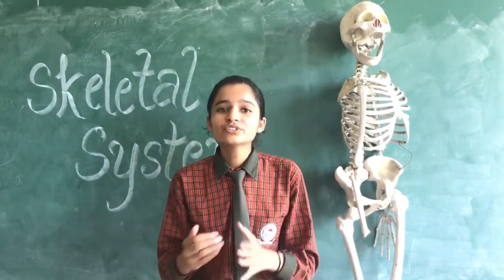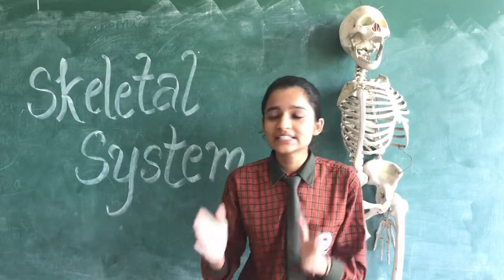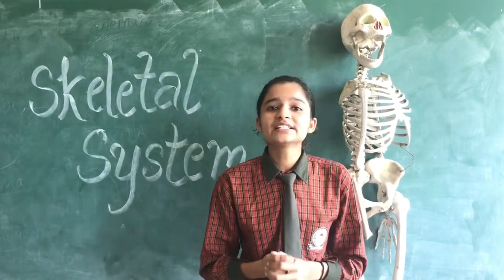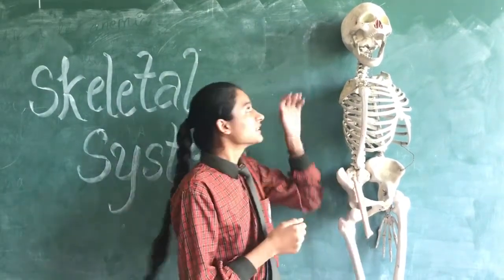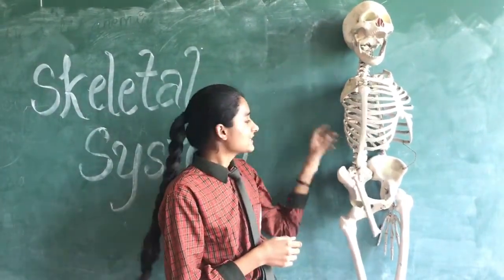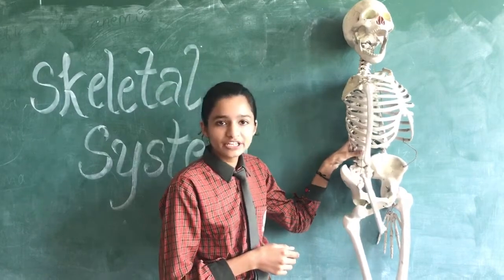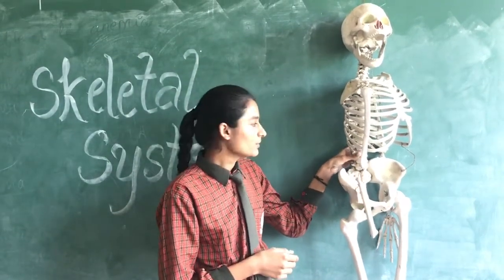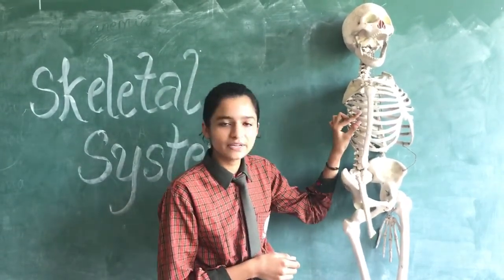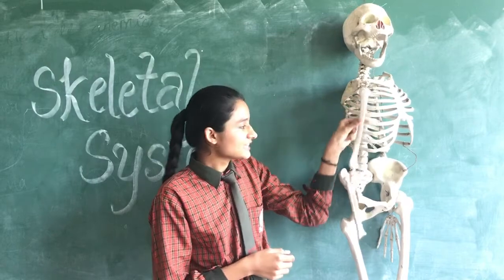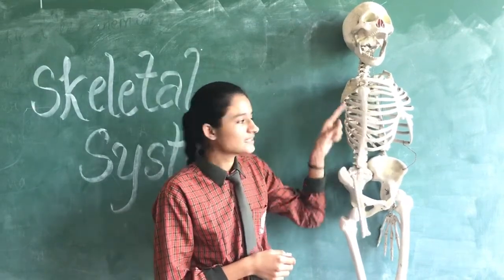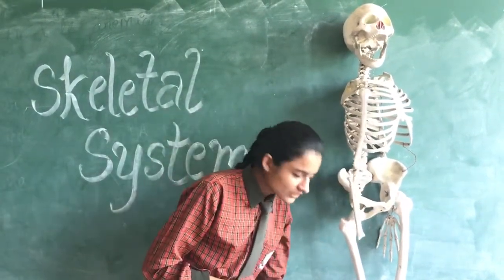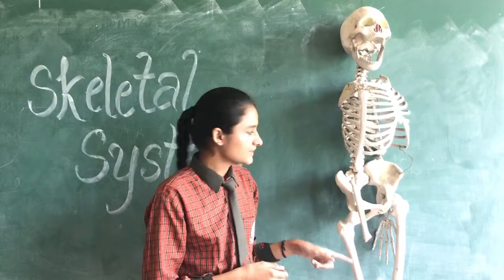Now I will tell you about some parts of the skeletal system. The parts of the skeletal system are: first, the skull; second, the vertebral column, which is known as the backbone or spine; next is the ribcage; and next is the humerus, which is part of the limbs.